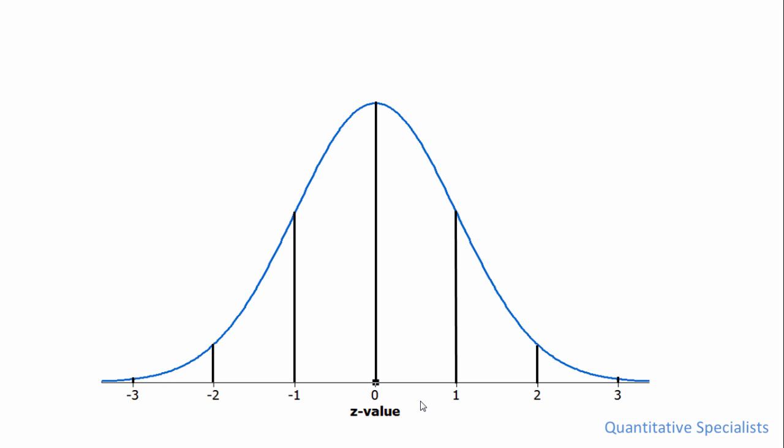In this video we'll take a look at z-scores and the normal distribution. On your screen you can see towards the bottom it says z-value, and you can think of this as a z-value or a z-score. Notice that it's labeled with a zero at the center there. So that's a z-value of zero.